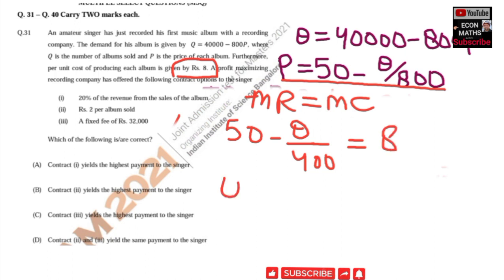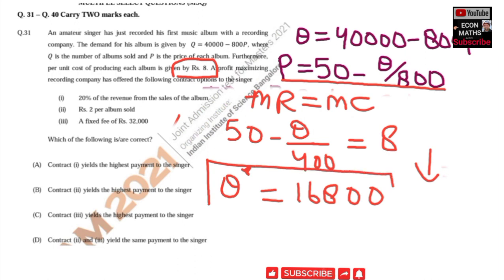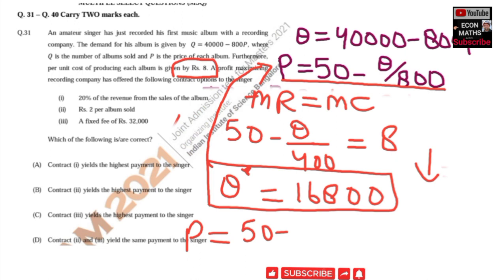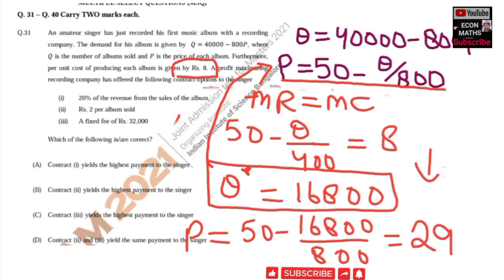Solving for Q, the optimal quantity is Q = 16,800. Substituting this into the inverse demand function to find the equilibrium price: P = 50 − 16,800/800 = 29. So equilibrium price is rupees 29 and equilibrium quantity is 16,800.